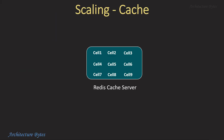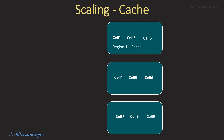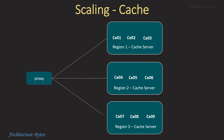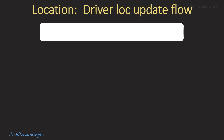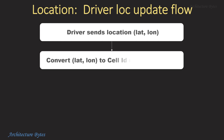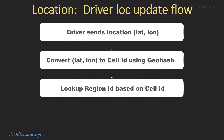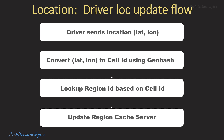We cannot store all the cell-driver location data on a single cache server. We must have a way of scaling horizontally by distributing data across many servers. If you treat a group of cells as a region, you can have cache servers by region, allowing you to distribute location data across cache servers by region and scale horizontally. The driver location update flow works as follows: the driver sends latitude and longitude to the server, the server converts it to a cell ID using Geohash, looks up the region ID based on cell ID, and finally updates the region cache server.